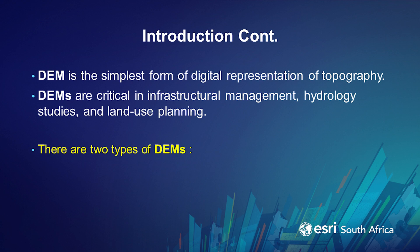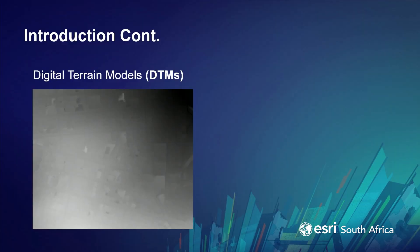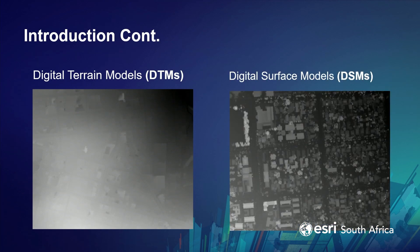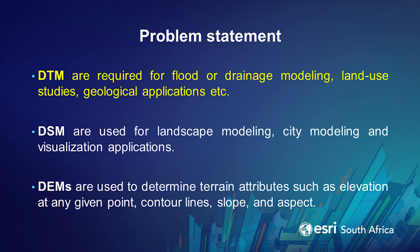There are two types of digital elevation models. Firstly, we have the digital terrain model, sometimes referred to as the DTM. This represents the bare ground. Secondly, we have the digital surface model, which represents buildings and trees and everything that has height above ground. Various applications require DEMs — DTMs are required for flood or drainage modeling and are also used for land use studies and geological applications. DSMs are used for landscape modeling and city modeling because they have information about buildings and trees. We can also use DEMs to determine elevation at any given point, and to extract contour lines, slope, or aspect.